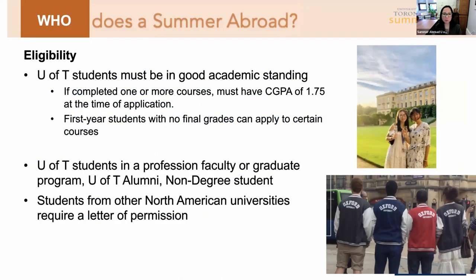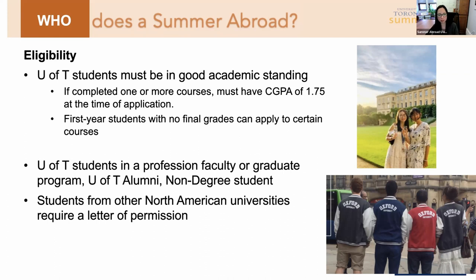In terms of eligibility, U of T students must be in good academic standing. To be eligible to apply, you must meet prerequisite courses and cannot be on academic probation. If you have completed one or more courses, you must have a CGPA of at least 1.75 at the time of application. First-year students with no final grades can apply to certain courses such as criminology that have no prerequisites. U of T students in a professional faculty, graduate program, alumni, or non-degree students are also welcome to apply, though current undergraduate U of T students take priority. Students from other North American universities can apply as visiting students but require a letter of permission from their host institution.